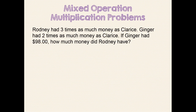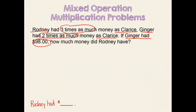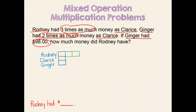Let's look at another problem. Rodney had three times as much money as Clarice. Ginger had two times as much money as Clarice. If Ginger had $98, how much money did Rodney have? First, we will rewrite the question in sentence form: "Rodney had blank dollars." We should start our model with one unit bar each for Rodney, Clarice, and Ginger. Since Rodney had three times as much money as Clarice, his base unit bar is one time as many, this is two times as many, and this is three times as many. We are also told that Ginger had two times as much money as Clarice — the base unit bar is one time as many, and this is two times as many. Finally, we are told that Ginger had $98, so we can show that at the end of her unit bar. Our question mark should go at the end of Rodney's unit bar.